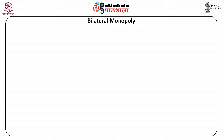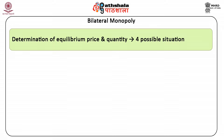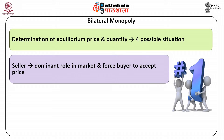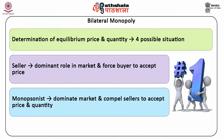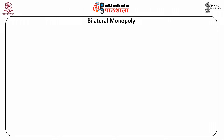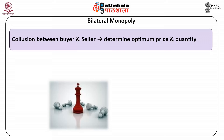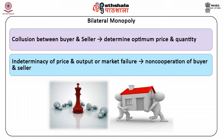In bilateral monopoly market there are four possible situations observed in the determination of equilibrium price and quantity. A: a seller may play a dominant role and force the buyer to accept the price offered by the seller. B: the single buyer or monopsonist can dominate the market and compel the sellers to accept the price and quantity offered by him. C: there may be collusion between buyer and seller, that is joint profit maximization, to determine optimum price and quantity. And D: indeterminacy of price and output, or market failure, due to non-cooperation of buyer and seller.